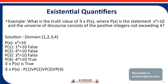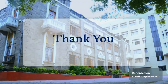For x = 1: 1² > 10 — false. For x = 2: 4 > 10 — false. For x = 3: 9 > 10 — false. For x = 4: 16 > 10 — true. So ∃x p(x) is true for some values. In other words, p(1) ∨ p(2) ∨ p(3) ∨ p(4) means ∃x p(x) is true. This is all about quantifiers. Thank you.